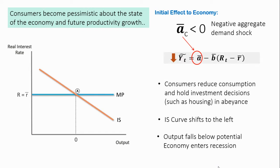Since consumers are pessimistic, they lose their confidence in the market and have negative expectations. Consumers would then reduce their consumption and hold investment decisions, such as buying a house, in abeyance for the time being. In the ISMP model, we can see that the IS curve shifts to the left, output falls below potential, and the economy enters a recession.